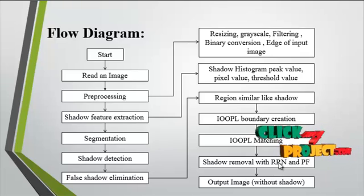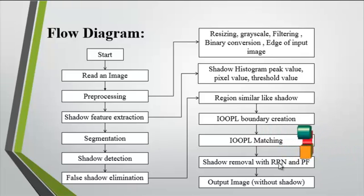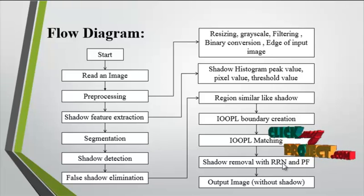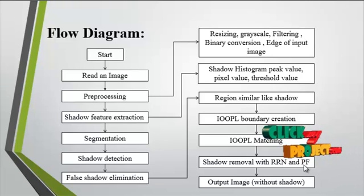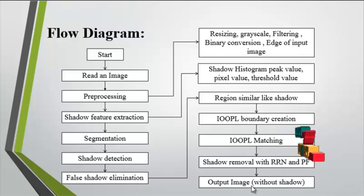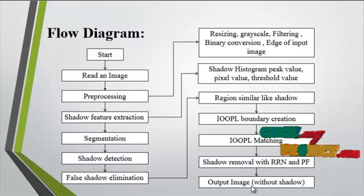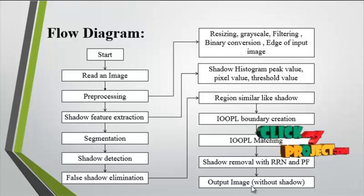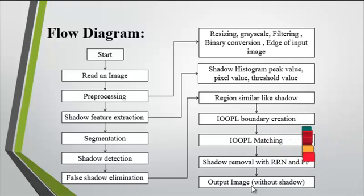Then IOPL matching is done after boundary extraction. Shadow removal is performed using RRN and PF — RRN stands for Relative Radiometric Normalization and PF stands for Polynomial Fitting. The output image from RRN and PF is the shadow-free image.